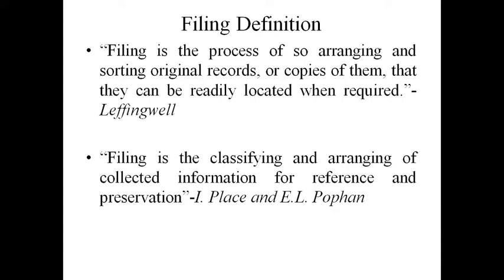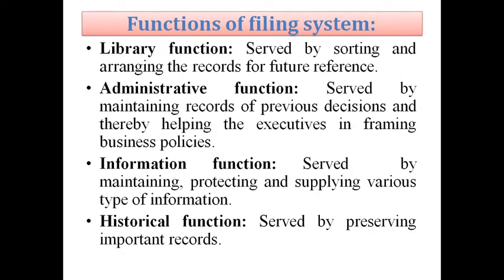Sorting means classification of various records and keeping copies — that is, identical copies of a particular document — and locating those records. The second definition is: filing is the classifying and arranging of collected information for reference and preservation. This definition also emphasizes classification, which means dividing documents or information based on some similarity, and arranging — that is, maintaining an order, perhaps date-wise, year-wise, or subject-wise.